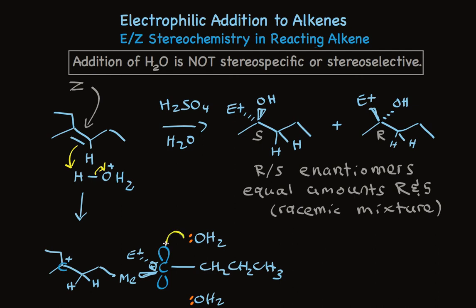Now water as a nucleophile can add to either lobe of that empty P orbital. The nucleophile adds from the top, or the nucleophile adds from the bottom. One makes the S enantiomer, the other makes the R enantiomer. Because approaching from the top and the bottom is equally probable, we make a 50-50 mixture, a racemic mixture of the two enantiomers.